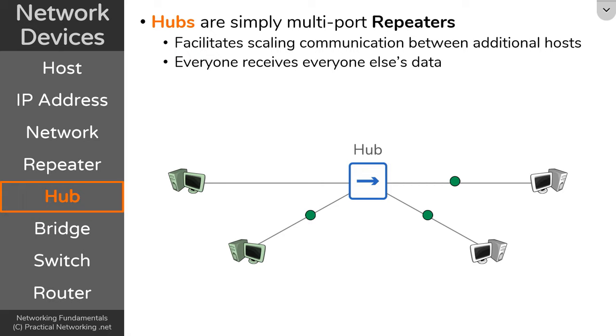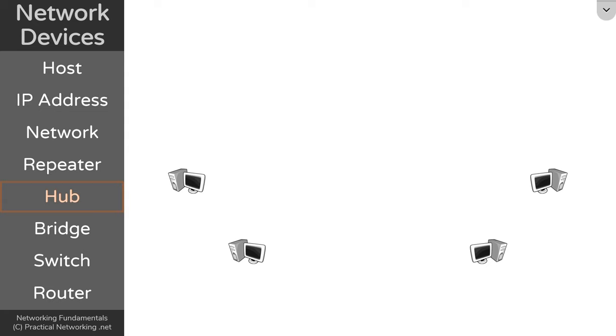A hub is the first device that allows us to connect multiple devices in the center so all of them have connectivity to each other. But as you can probably see, the problem with a hub is that everybody receives everybody else's data. These two hosts over here, which are uninvolved in the communication between two other hosts, are receiving a copy of everything they send.